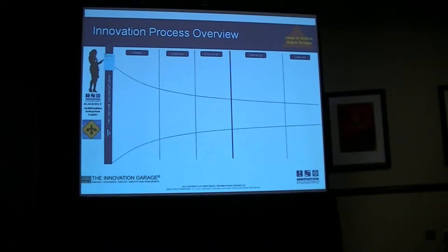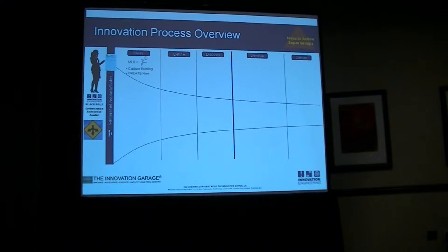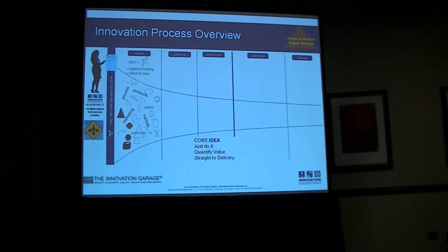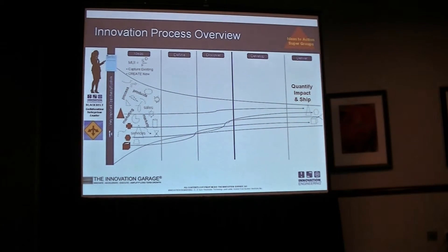The dark line on the chart really shows where your traditional gate process would start — that dark vertical line. So what we're doing in this front end is identifying the ideas. There's a lot of stimulus and diversity. We're creating — is it an existing idea or is it something new? There's all this noise happening in this front end, this big front end of the funnel. What we're looking to do is identify: is it a core idea? Is it something core to the business that we can just do? And when we identify that, we quantify it very quickly and just shift.